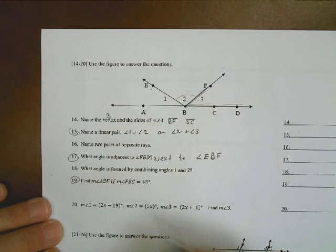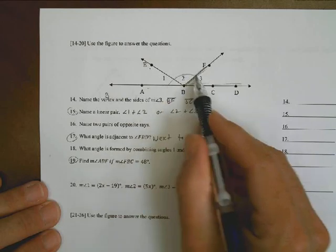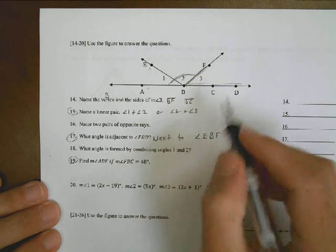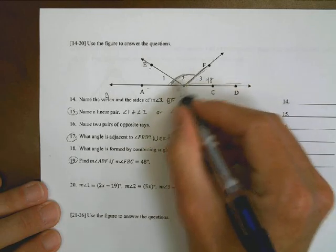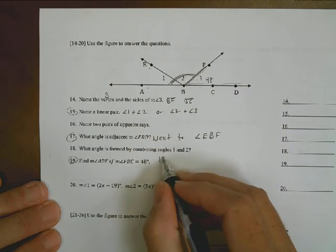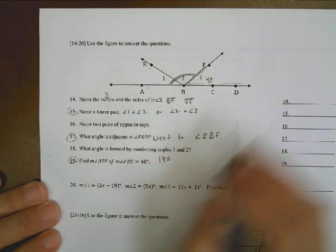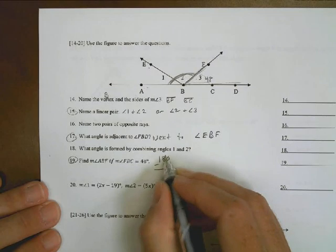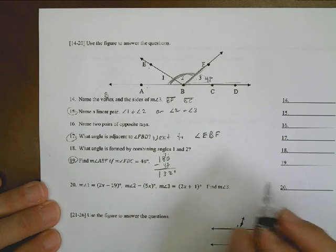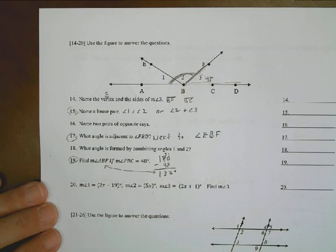Number 19. Find angle ABF. So this whole thing here. If FBC is 48, so if this is 48, what is the rest of it basically? Well, the rest of it is going to be what's left after 180, because the entire thing is 180 degrees. It's alignment, right? So we take 180 minus 48, and we would discover that what's left is 132 degrees. So we'd say 132 degrees is what ABF is going to be.